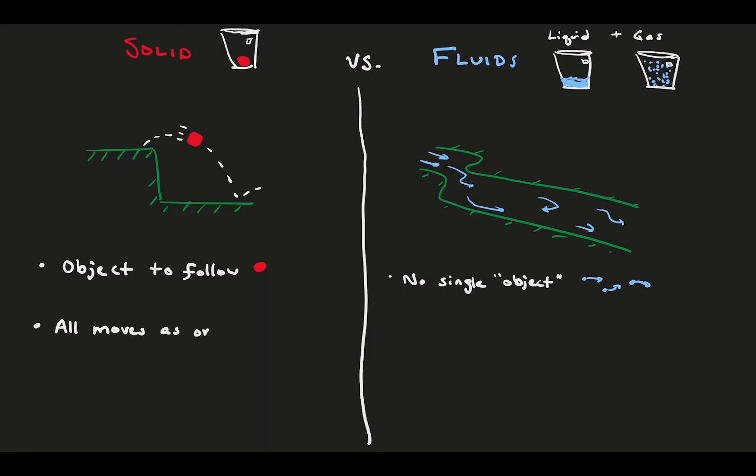In terms of motion, a solid ball all moves as one. If you can track one point on the ball, you can describe the entire ball's motion. Fluids move relative to itself. At any given point in time, a fluid particle might be doing something drastically different from its neighbors.